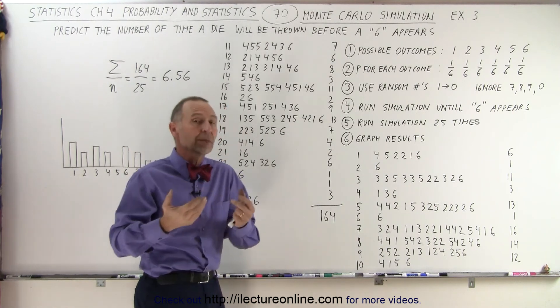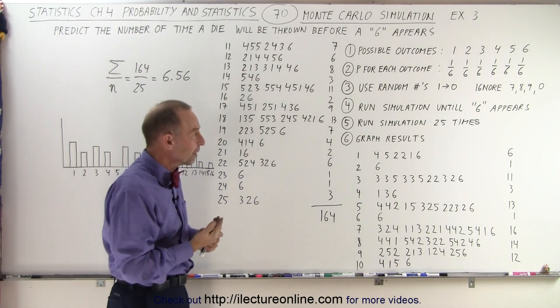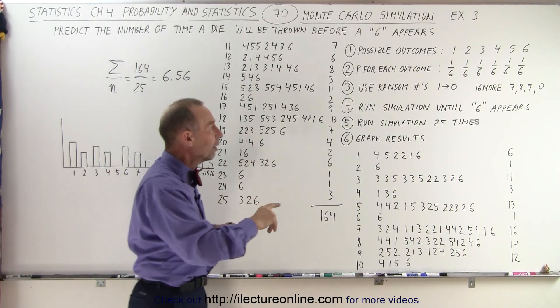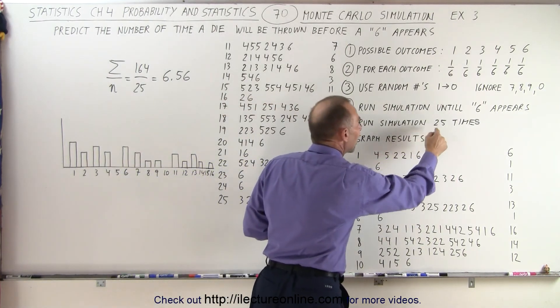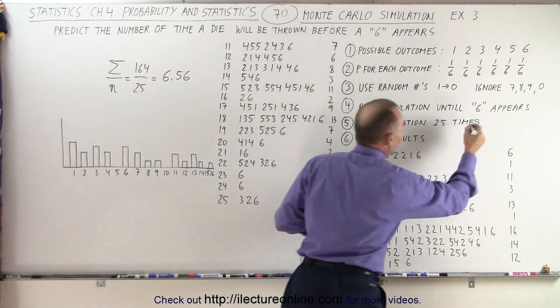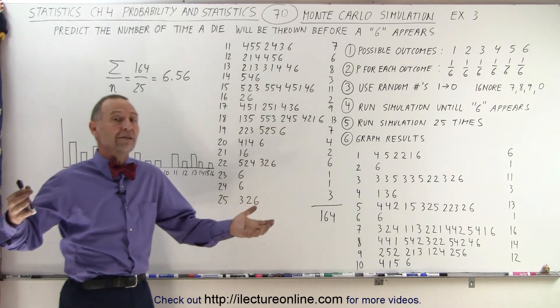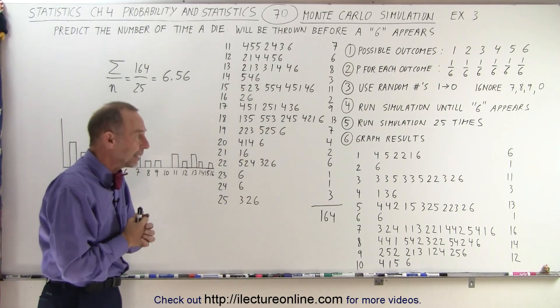You then run the simulation until the six appears and count the number of times you have to run it until the six appeared, and you do that 25 times. So run the simulation 25 times, and I guess I should have an 's' there, and then you need to graph or somehow tabulate the results.